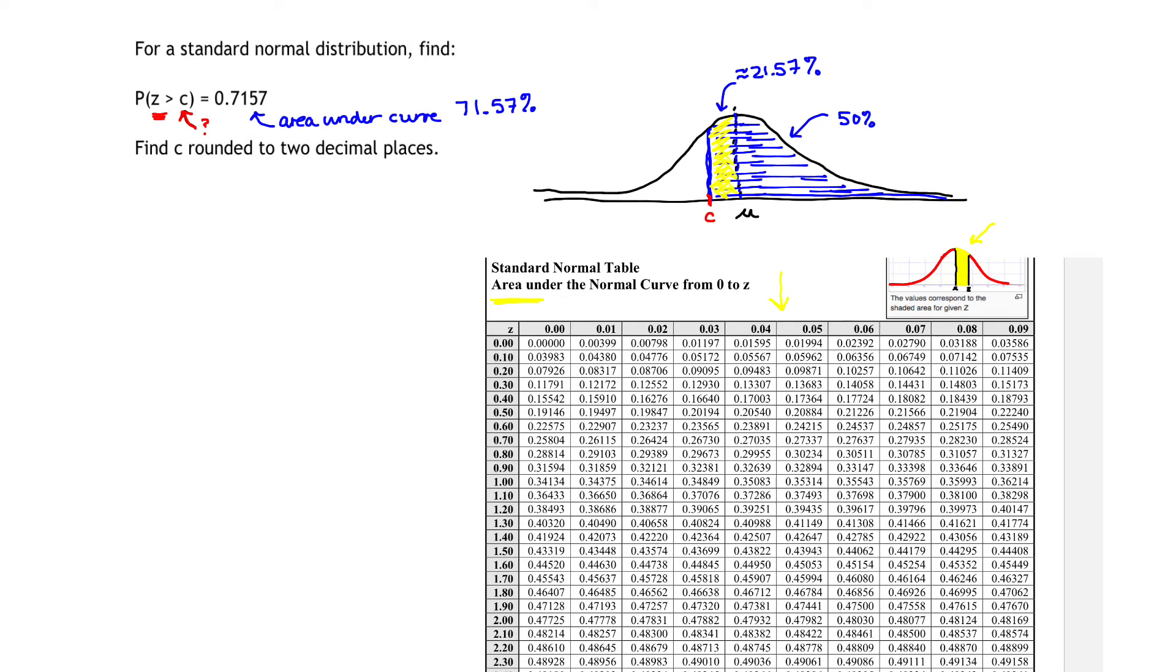If I happen to know the C value or the Z value that goes with this yellow bar, that's going to be the C value that actually corresponds to my picture, correct? So let's look for that value.